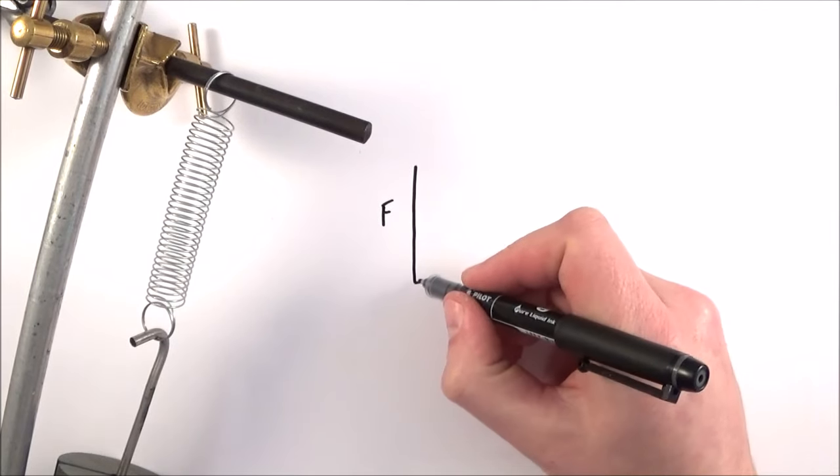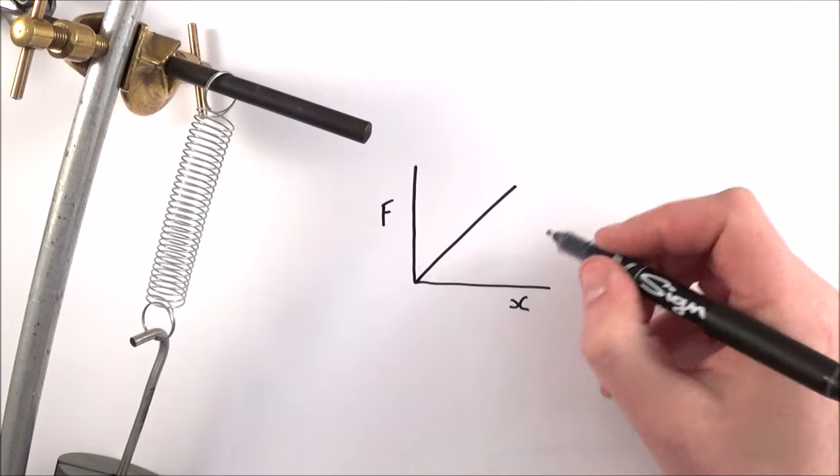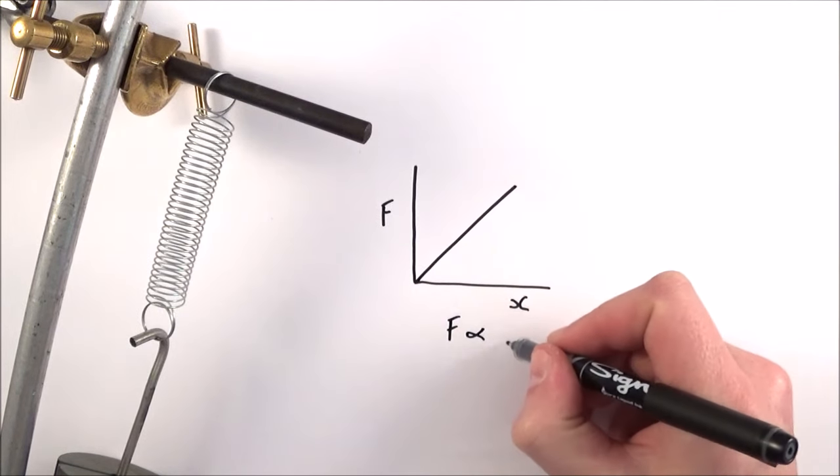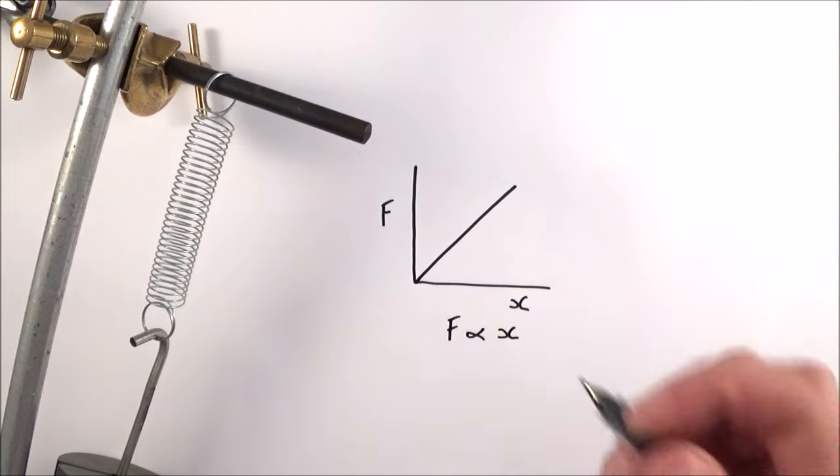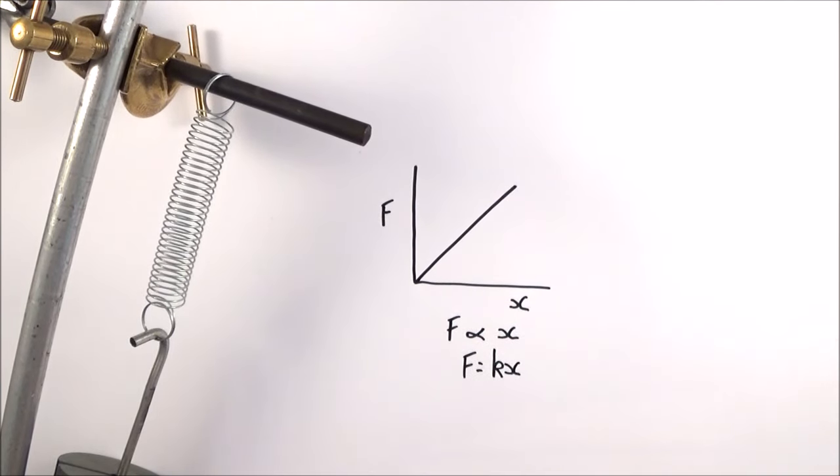We get a nice region where the force is proportional to the extension, and we can therefore say that F is equal to kx. This is all put together nicely in Hooke's Law.